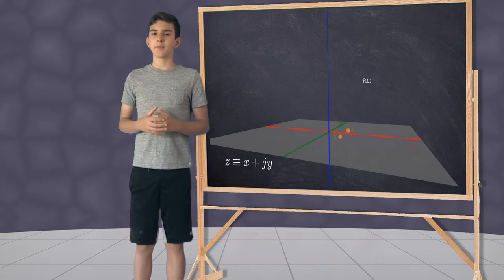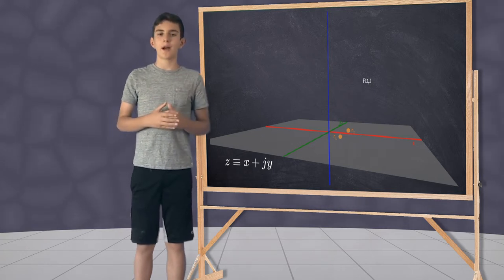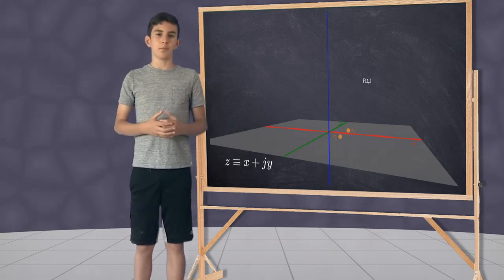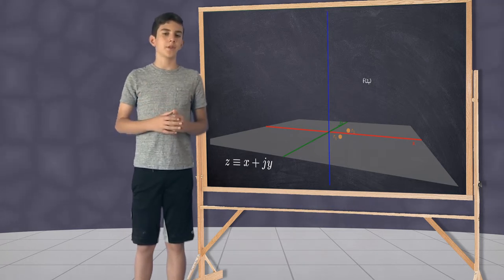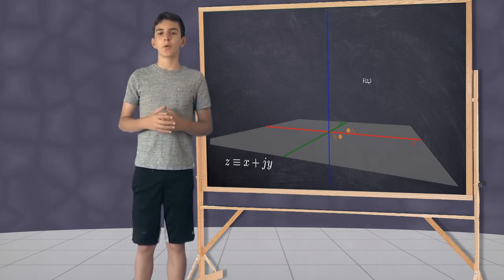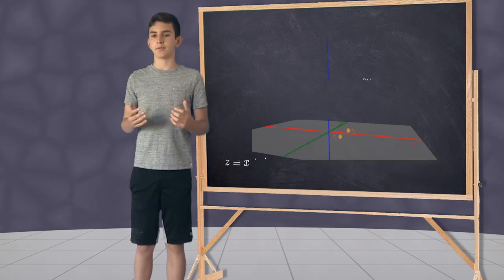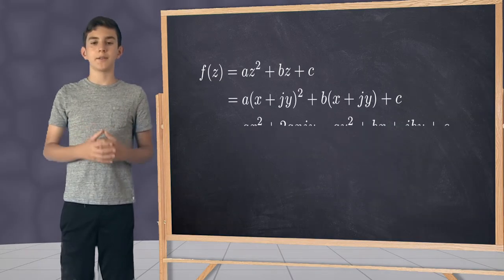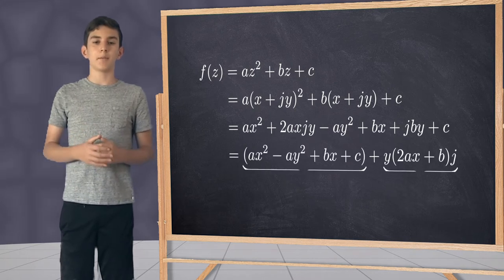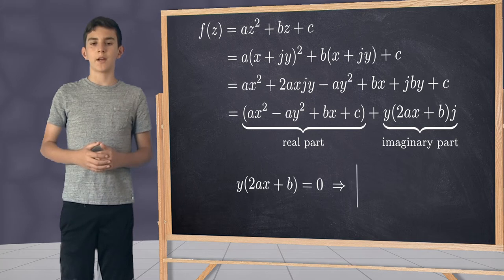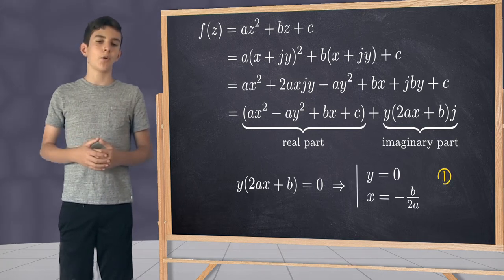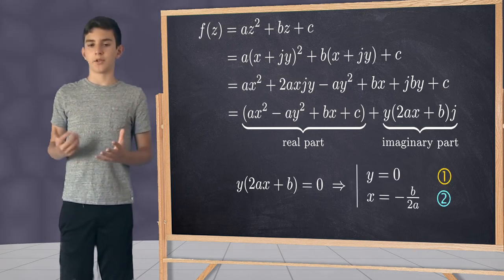But by allowing complex variables, we also have to allow complex outputs for the function. However, we have one dimension left on our graph. Just as before, we're looking to visualize the curve where the function is real. For the function value to be real, the imaginary part must be zero. Applying the product rule from earlier, either y needs to be zero, or x needs to be negative b over 2a.